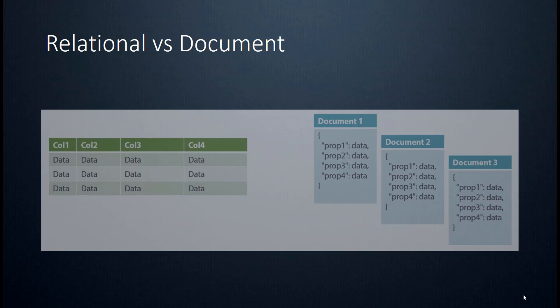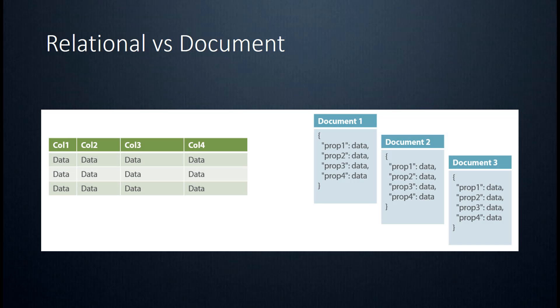Before we go, here's a visualization of a relational database on the left with columns and rows, and on the right a document database with a structure very similar to JSON. With a relational database, you have to define all your tables and columns. With a document database, data is stored in JSON-like objects that don't have to be predefined — you can define these as you go in your application, which makes it very flexible and dynamic. Hopefully you were able to soak up some of the information. If you liked this, please leave a like and subscribe. Thanks for watching.